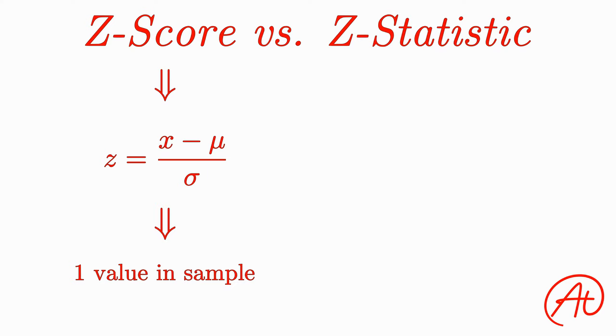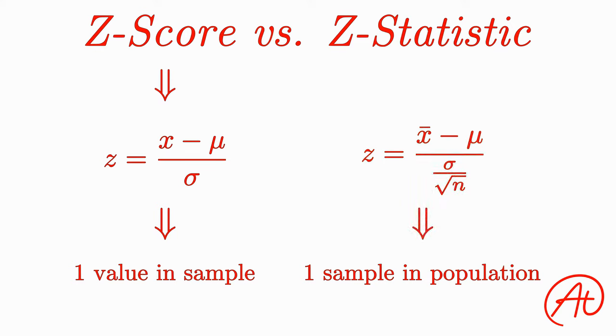However, when you're looking at an entire sample within a greater population, such as your stat class among all stat classes in the world, the formula looks like this, where x-bar represents the mean of your sample, aka the average grade of your class, mu is the mean of the entire population, aka the mean grade for all stat classes.